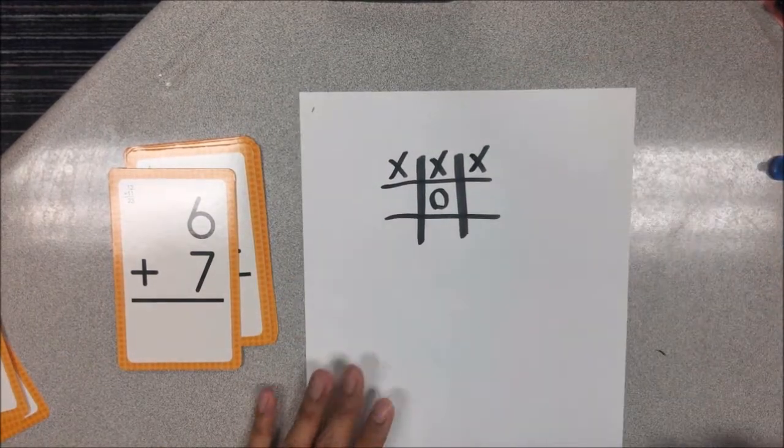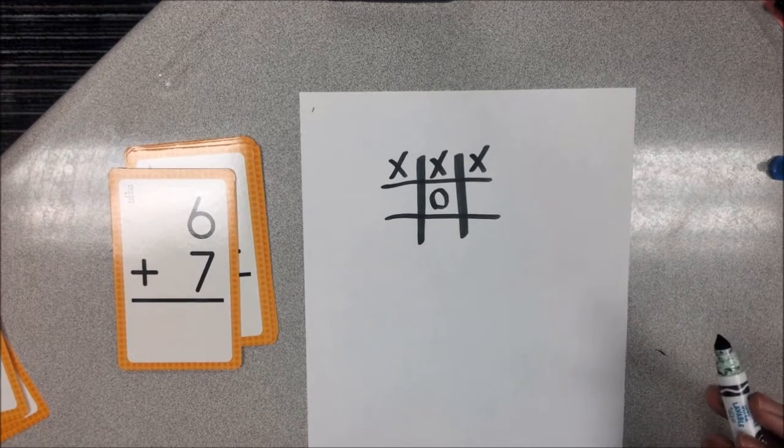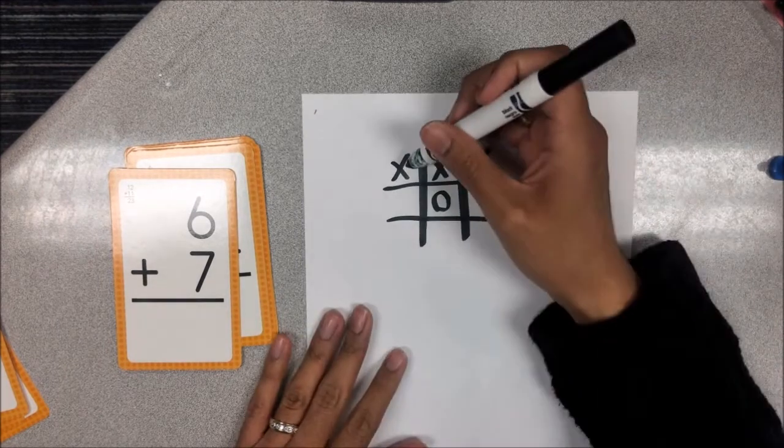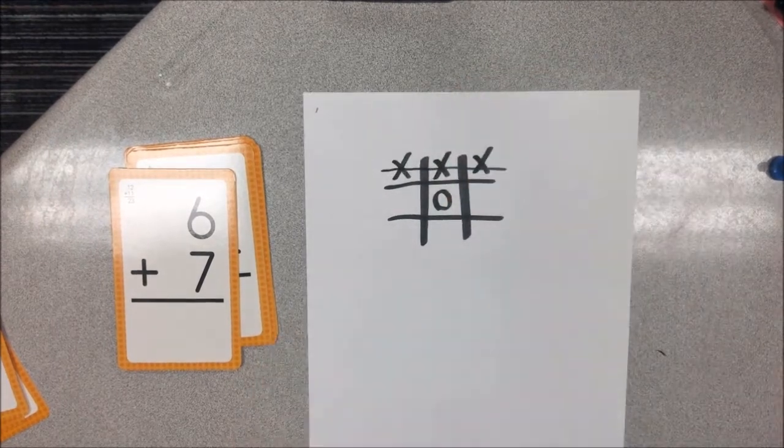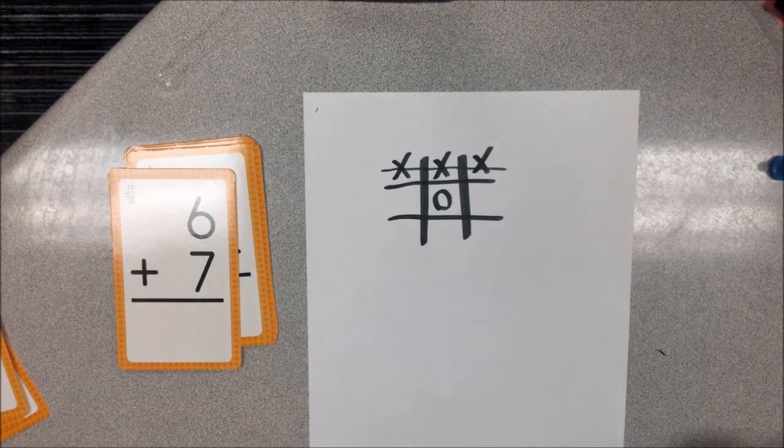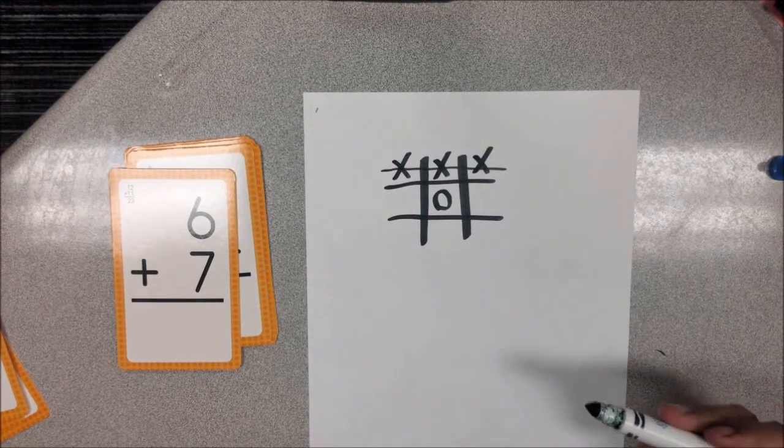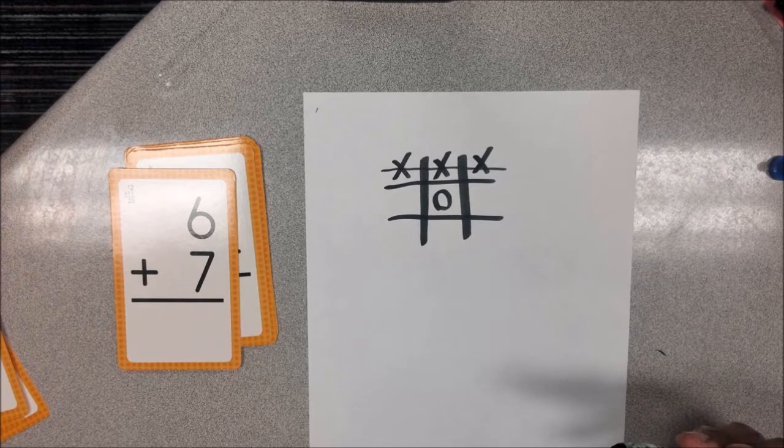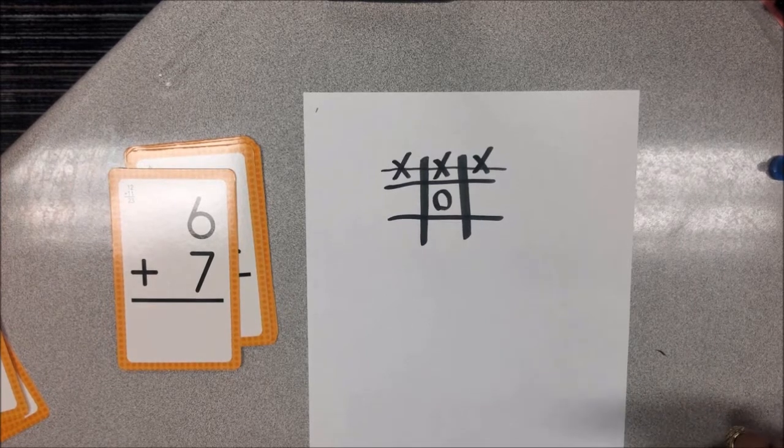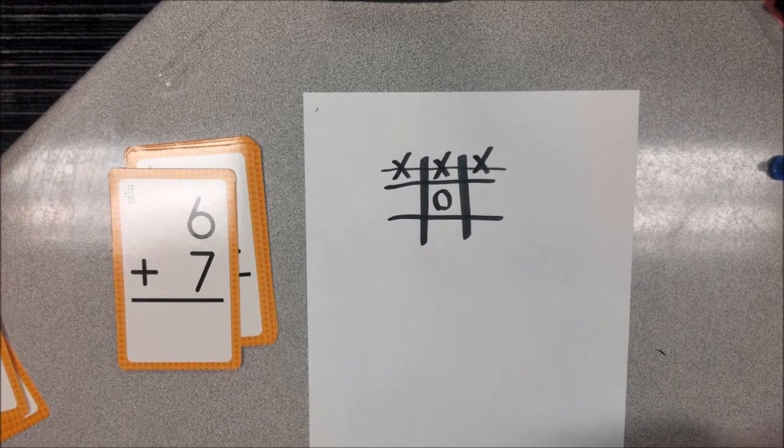Whenever a player gets three of their symbol in a line then that means they win that round. And the players can keep playing rounds until they have no more cards left. And whoever has won the most rounds has won the whole game.